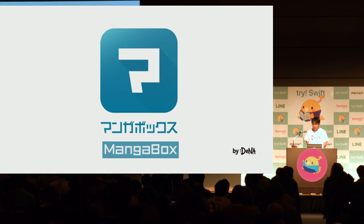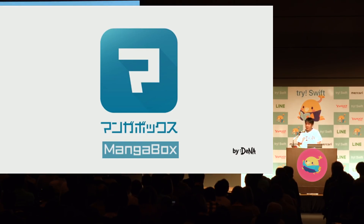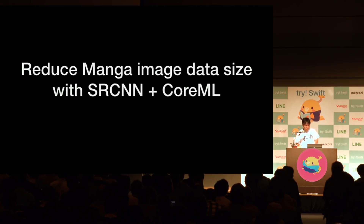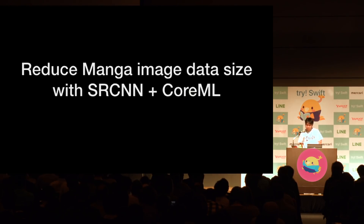By the way, my primary project is developing the MangaBox app, which is a Japanese online Manga service. I found that using SRCNN and Core ML can reduce the amount of Manga image file transfer.